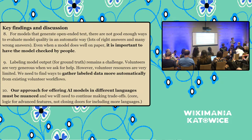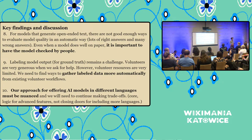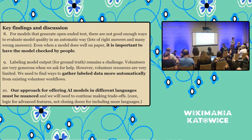At one point there was a concept of having something like a feature store — quickly explaining: this is like the input to a machine learning model, features about an article, for example how many references it has. If we shared those, maybe it could satisfy some of the needs we have without having to generate an entire model.